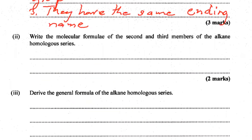Part two: write the molecular formula of the second and third members of the alkane homologous series. They've given us the first one, methane, so they want ethane and propane. For ethane, the second one, it would be C2H6. And for propane, it would be C3H8.